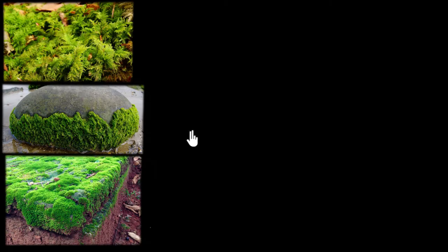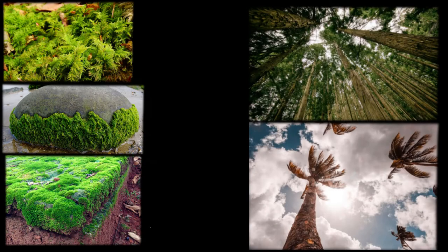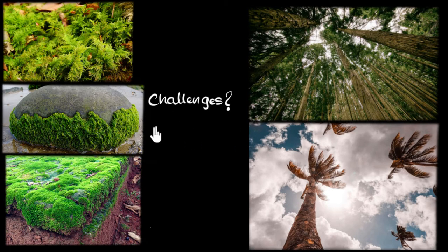With time, plants slowly started evolving and eventually they were able to overcome those challenges. Today we can have tall plants, plants which can grow into trees, trees which can grow hundreds of meters tall. The question we're going to answer in this video is: what are the challenges that early plants faced because of which they couldn't grow tall, and how did they overcome them?